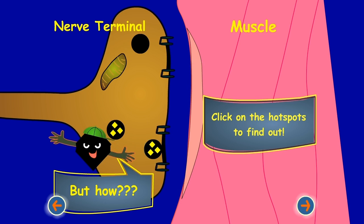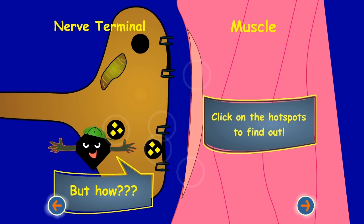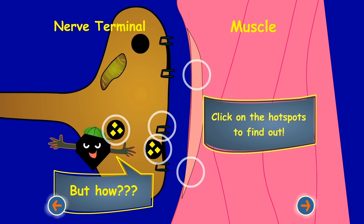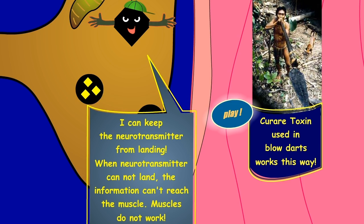But how? I can keep the neurotransmitter from landing. When neurotransmitter cannot land, the information can't reach the muscle. Muscles do not work.